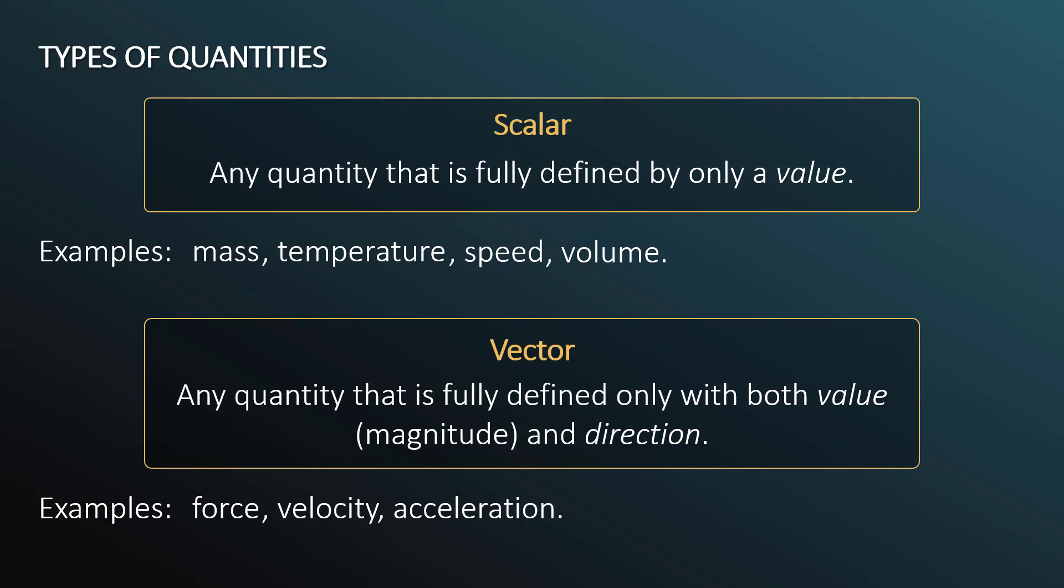Force, I can apply a push or a pull in a specific direction. So force has some value in some direction, so it is considered a vector. Whereas temperature, if I tell you it is 30 degrees Celsius outside, I cannot tell you it's 30 degrees Celsius up or down. Temperature is a scalar value. It is fully defined only by the value associated with it.